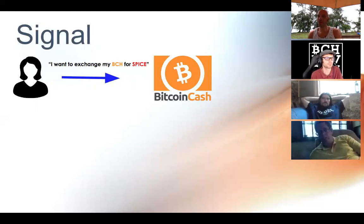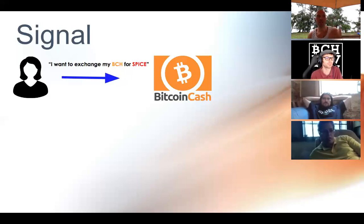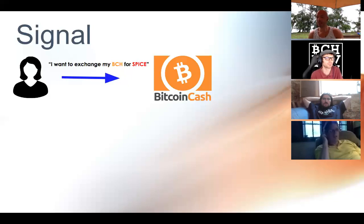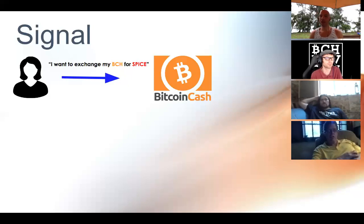This is similar to the memo protocol — you broadcast a message and anybody who can read it can pull it down. The signal is specially formatted with tags identifying what it is. It contains information about how much BCH she wants to trade and specifically which UTXO she wants to trade. She's saying: this UTXO right here, I want to exchange for SPICE at this exchange rate. She broadcasts that to the Bitcoin Cash network.